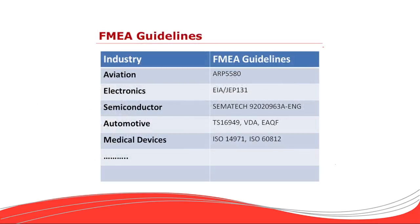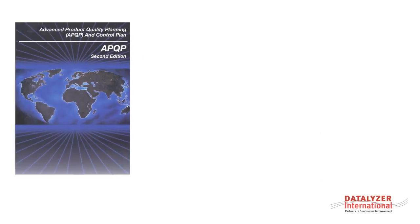The use of FMEA started in 1950 in the aviation industry. Now it is used in more and more industries. In some industries it is now mandatory to apply FMEA and control planning. It is, for example, part of a Six Sigma implementation during the measure and analysis phase.